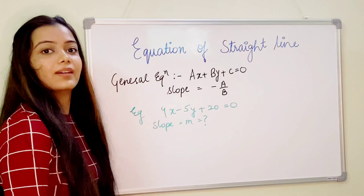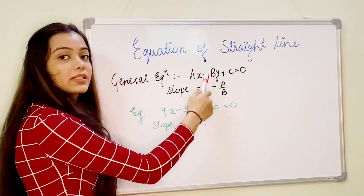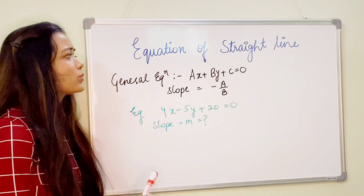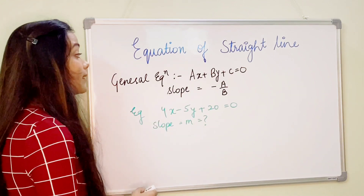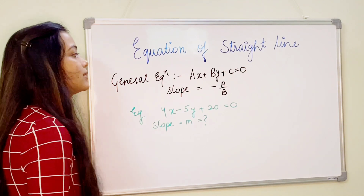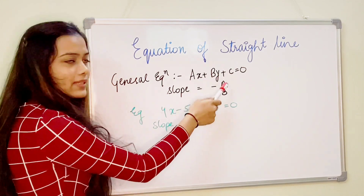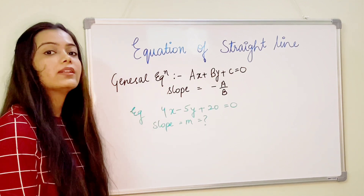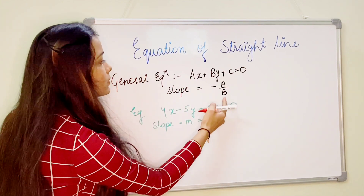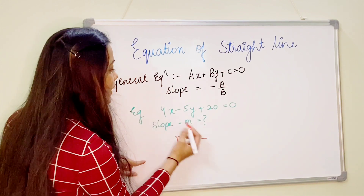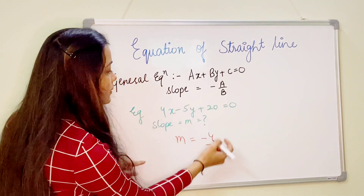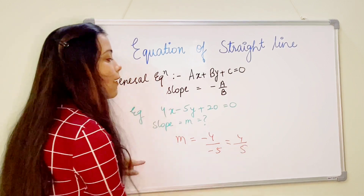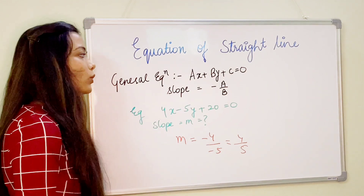Now for the general equation, it is expressed as ax plus by plus c equals 0, where a, b, and c are arbitrary constants and both a and b cannot be zero simultaneously. In this form, the slope is represented as minus a over b, which are the coefficients of x and y. For example, for the equation 4x minus 5y plus 20 equals 0, the slope is minus a over b. We include the signs, so the slope equals 4 over 5.